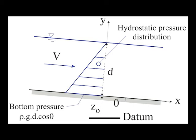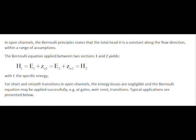Where d is the water depth, z knot is the bed elevation, v is the velocity, and theta is the bed slope.